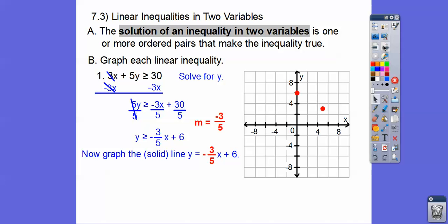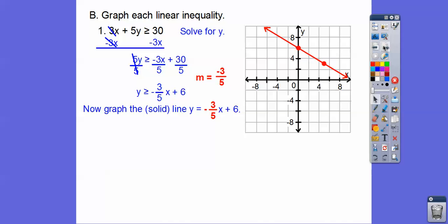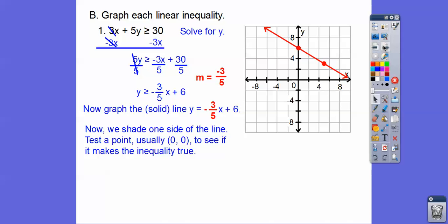Are you guys with me? Okay, so then let's connect it with a line. And now we're going to shade one side of the line. We're either going to shade below here or above here. So let's test a point to make sure if it's true or not. So I like testing (0,0). The only time you can't test (0,0) is if the line goes through (0,0).